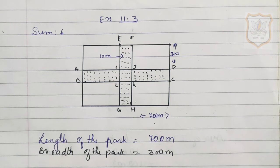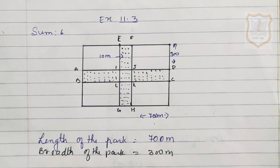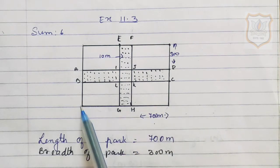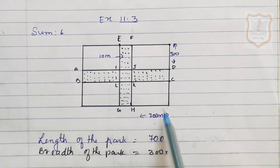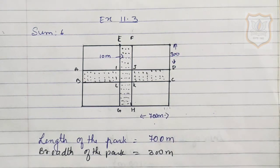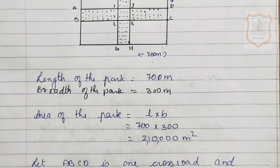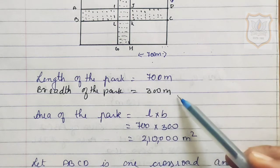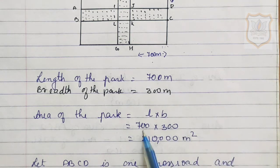We have to give the answer in hectares. First we will find out the area of this entire park taking length 700 meter and breadth 300 meter. Area of the park equals to length into breadth, where length was 700 and breadth was 300. So 700 multiplied by 300 will be 2,10,000 meter square.